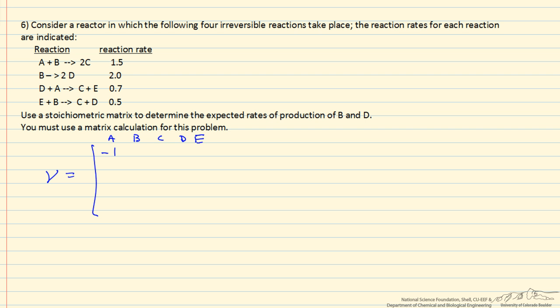So minus 1 for A in the first reaction because it's a reactant, minus 1 for B, plus 2 for C, and 0 for D and E. The third reaction: A is minus 1, B is not involved, C is plus 1, D is minus 1, and E is plus 1. And then the fourth reaction: A is 0, B is minus 1, C is 1, D is 1, E is minus 1.